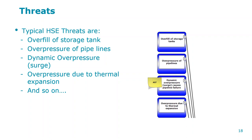Overpressure due to thermal expansion is very real in hot climates like India — ambient temperatures in Nagpur can reach 40-45°C. If there's a liquid in a storage tank with no relief designed, the vapor will have tremendous pressure and try to escape. These are typical threats, and remember all threats are always on the left-hand side of the bowtie, shown with a blue border box.